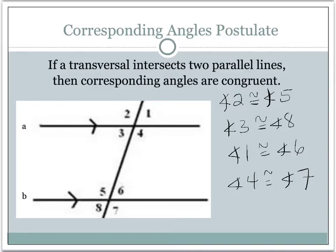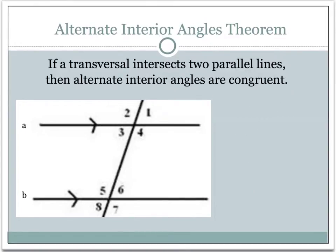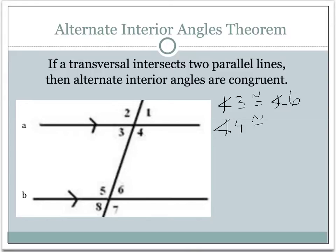The next theorem is called the alternate interior angles theorem. It states: if a transversal intersects two parallel lines, then alternate interior angles are congruent. The if statement is the same as before — we still need a transversal intersecting two parallel lines. Since that's true, we can say alternate interior angles are congruent. So angle three and angle six are congruent to each other, and angle four is congruent to angle five — the other pair of alternate interior angles.